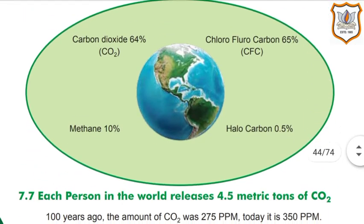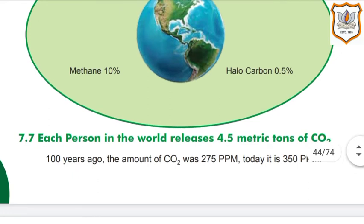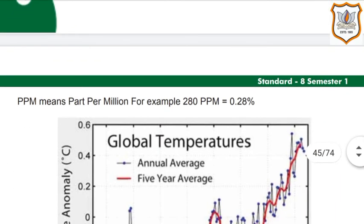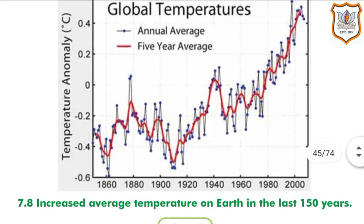Each person in the world releases 4.5 metric tons of carbon dioxide. 100 years ago, the amount of carbon dioxide was 275 ppm; today it is 350 ppm. PPM means parts per million — for example, 280 ppm equals 0.28%. You can see one graph in your textbook showing increased average temperature on Earth in the last 150 years.